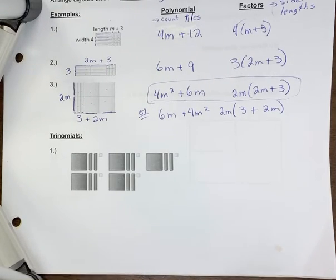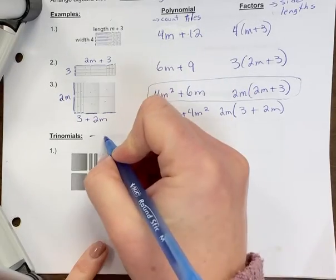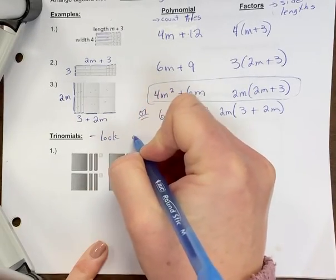All right, when we look at trinomials, we have them grouped. So this is a different method to look at them. For trinomials, you're going to look at groups.